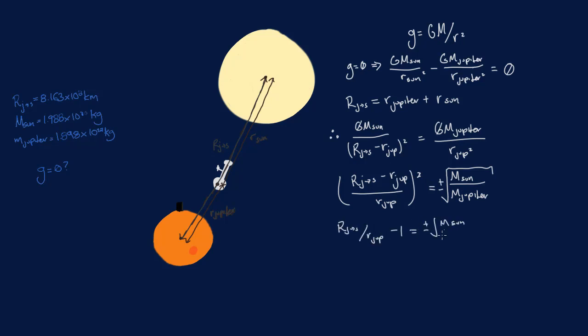Next, we divide the left hand side by the distance to Jupiter and move the one to the other side. Finally, we rearrange our equation so that we have an expression for the distance to Jupiter.